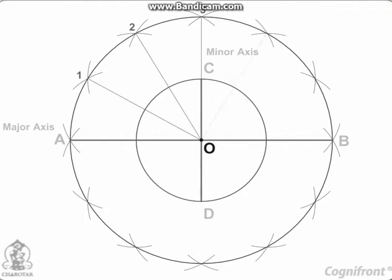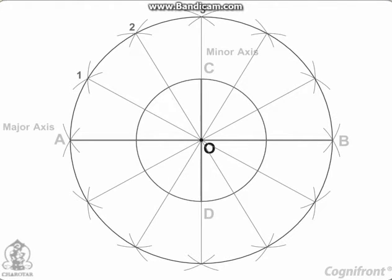Draw lines joining these points with the center O and cutting the minor axis circle at points 1'', 2'', etc.